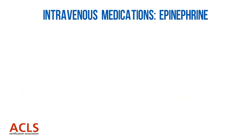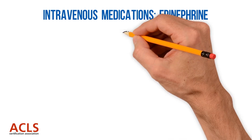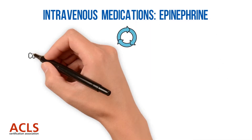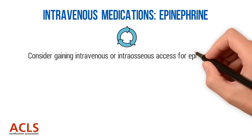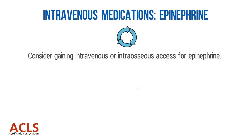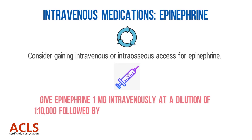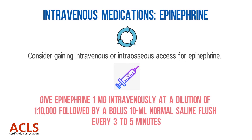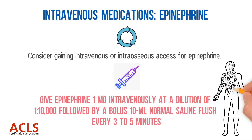Regarding intravenous medications — epinephrine: repeat the circular algorithm and consider gaining intravenous or intraosseous access for epinephrine. Once access is established, give epinephrine 1 mg intravenously at a dilution of 1 in 10,000, followed by a bolus 10 mL normal saline flush every 3 to 5 minutes. It is recommended to elevate the extremity where IV access is in place while administering drugs, and administer the drug with chest compressions in progress. These actions facilitate the flow of drugs to the central circulation.